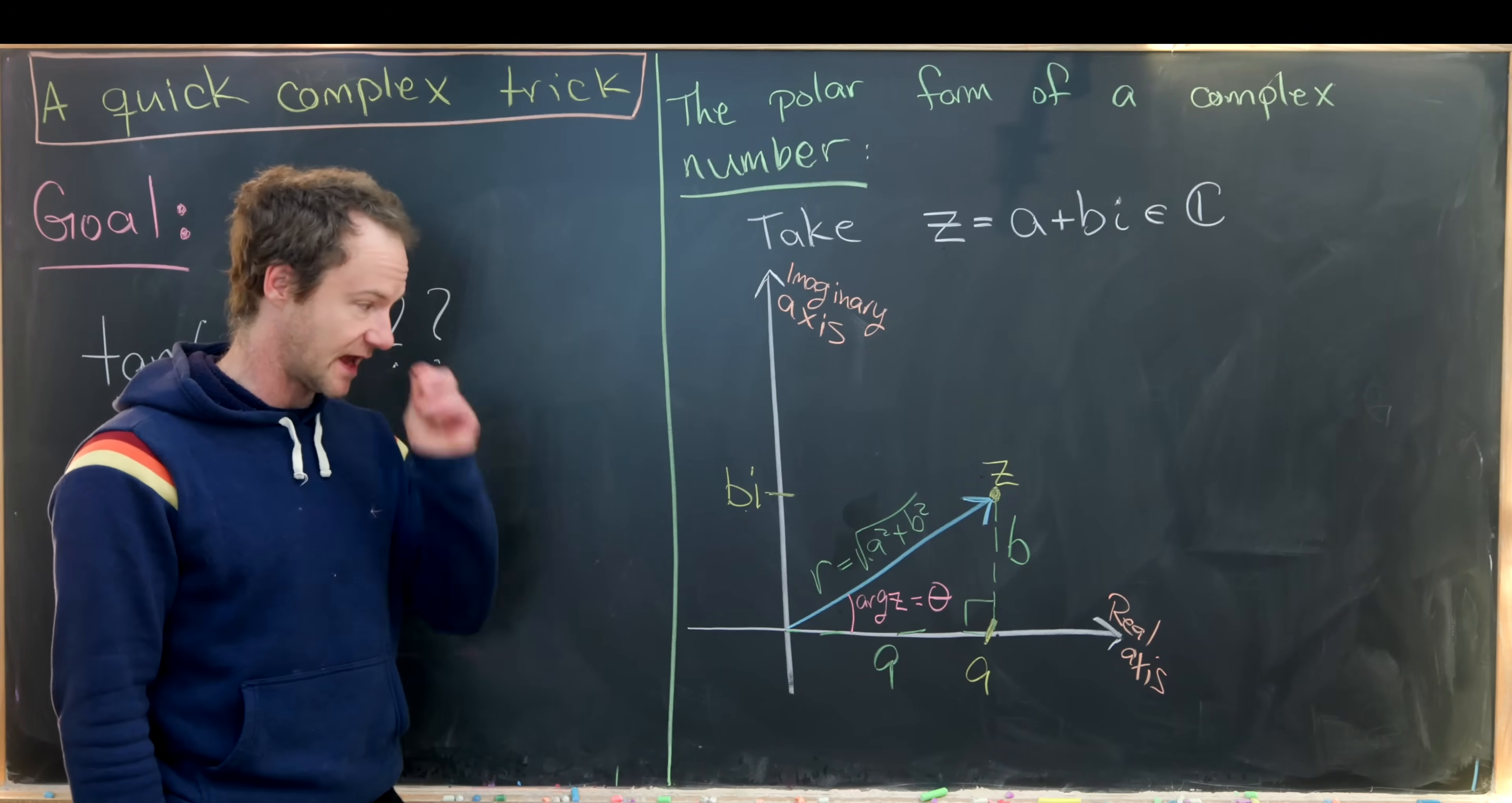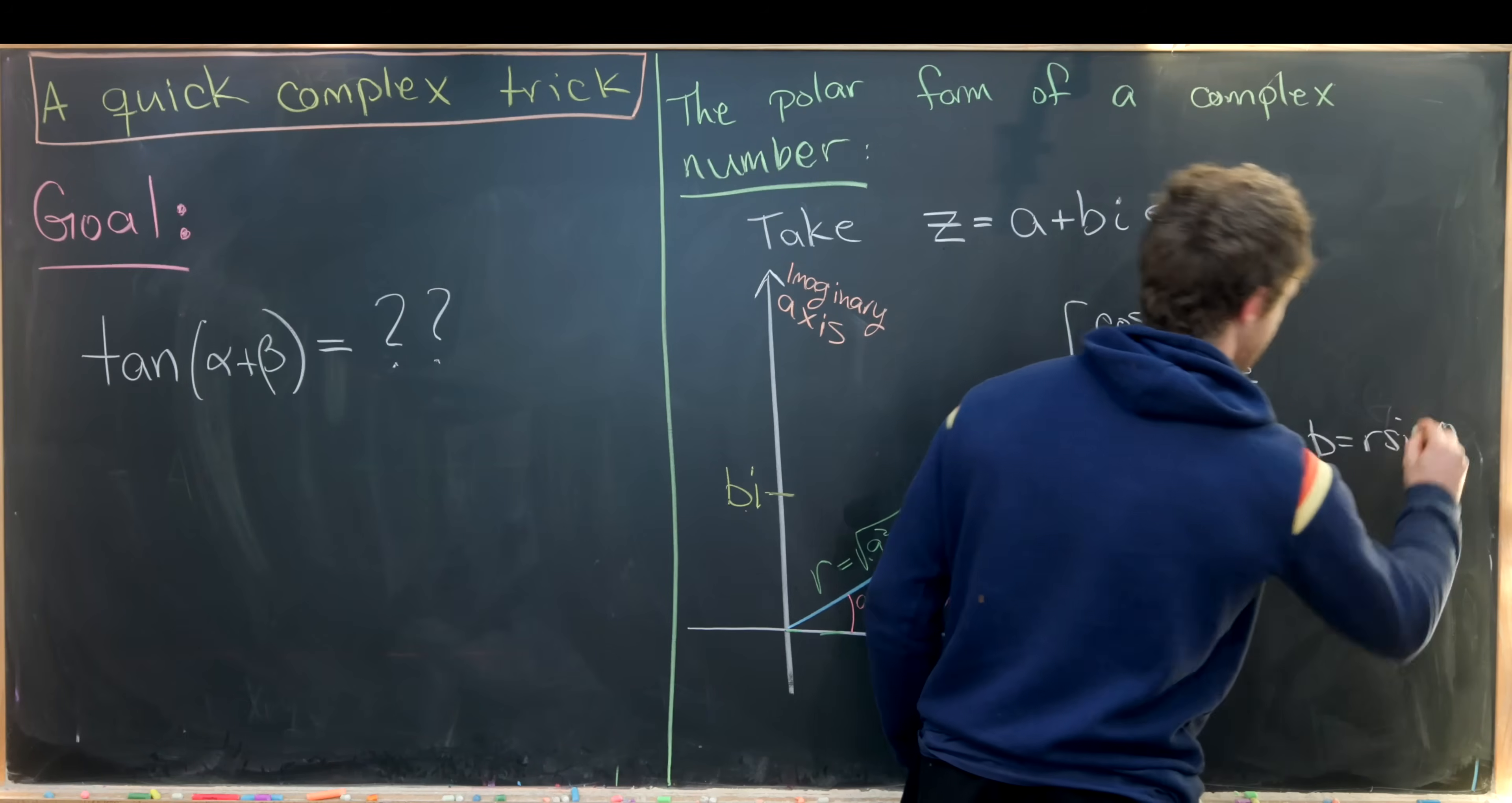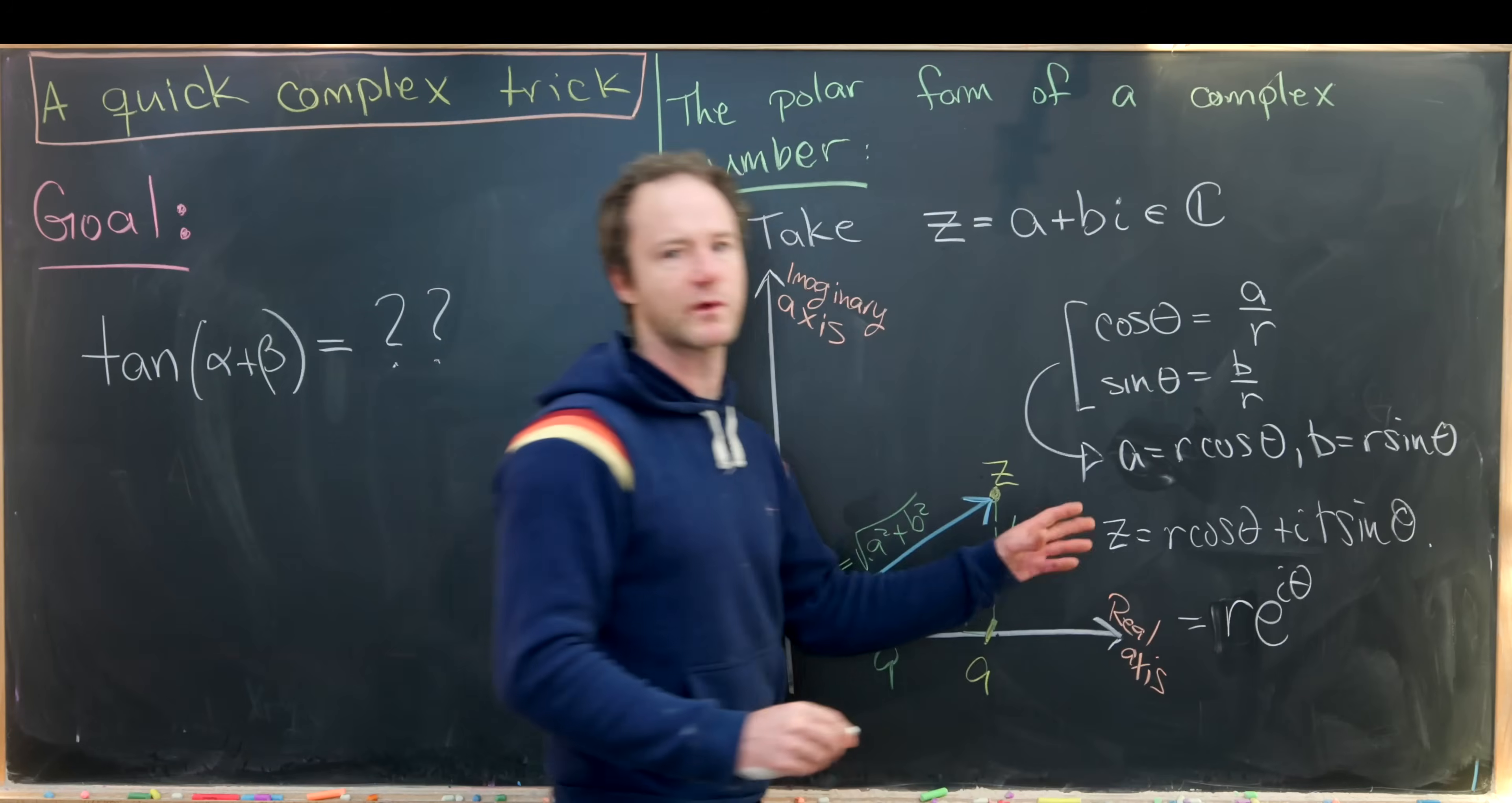So if we take the cosine of this angle theta, let's see what we get. We'll have cosine theta is a over r. That's pretty clear, it's adjacent over hypotenuse. And then sine of theta will be equal to b over r. But we can easily solve those as follows. We have a equals r cos theta, and then we have b equals r sine theta. And then from here, we can put those back together and we'll see that z, which is a plus bi, is r times cosine theta plus i r times sine theta. And that would be the polar form of our complex number. Sometimes this is all wrapped up in Euler's formula, so we would write this as r e to the i theta, but we won't really worry about that.